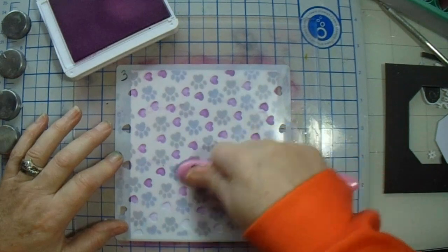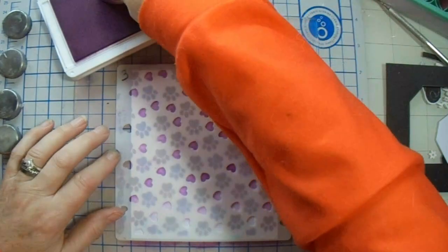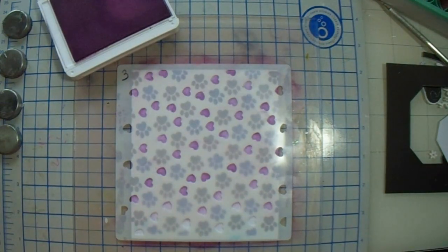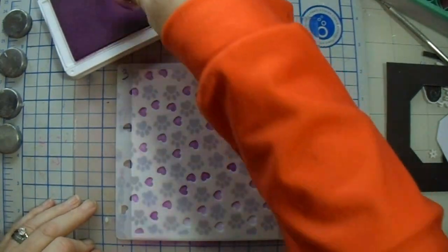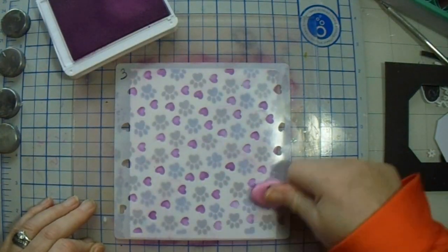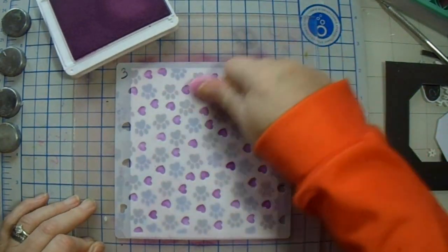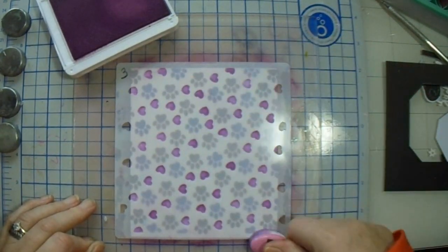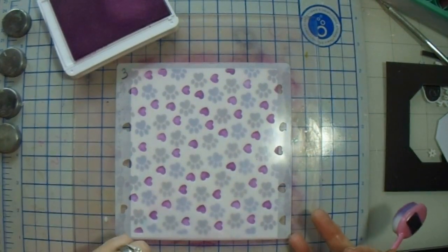I use a Waffle Flower grip mat on this Tonic magnetic mat that I got for using stencils with. When the Waffle Flower grip mats came out, I got one and put it on here, and now I don't need the magnets at all.